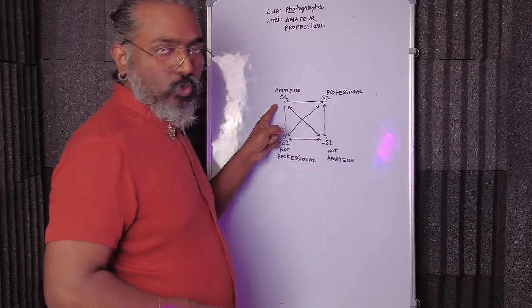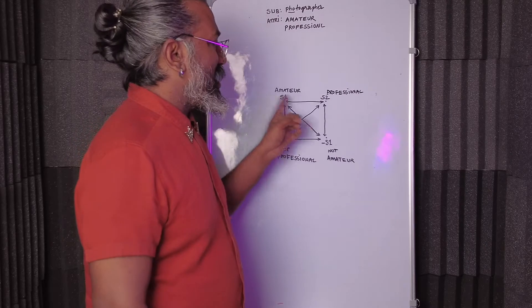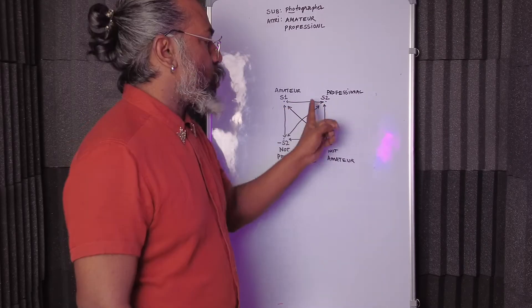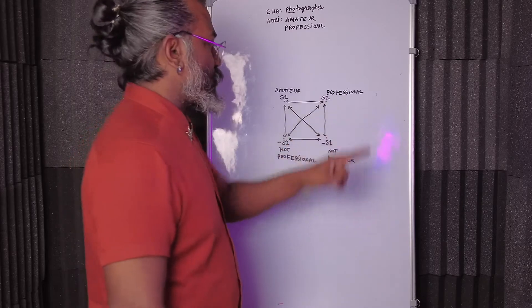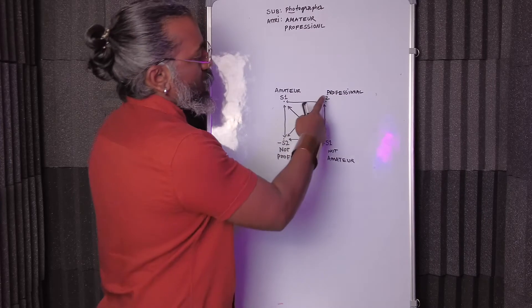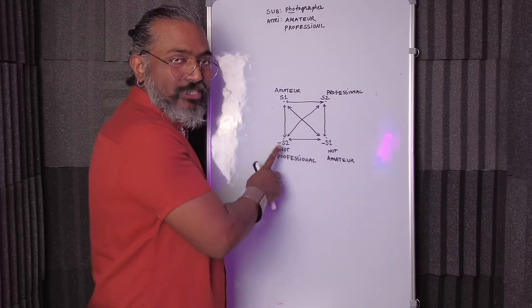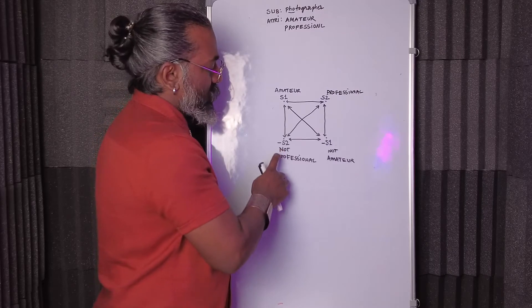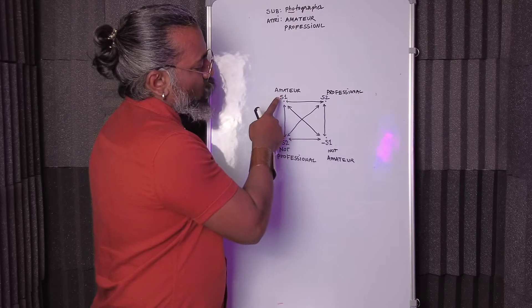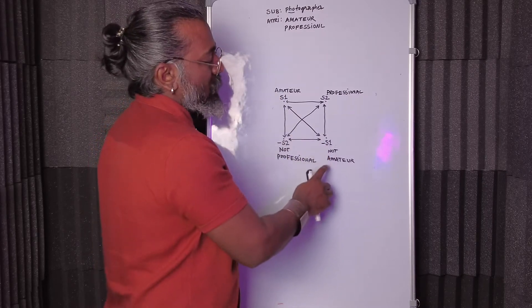So our S1, the first attribute is amateur, and S2 we have written the opposite or contrary word, professional. As we know, according to the semiotic square, the diagonal of S2 is minus S2, that is not professional. Likewise, S1 diagonal is minus S1, not amateur.